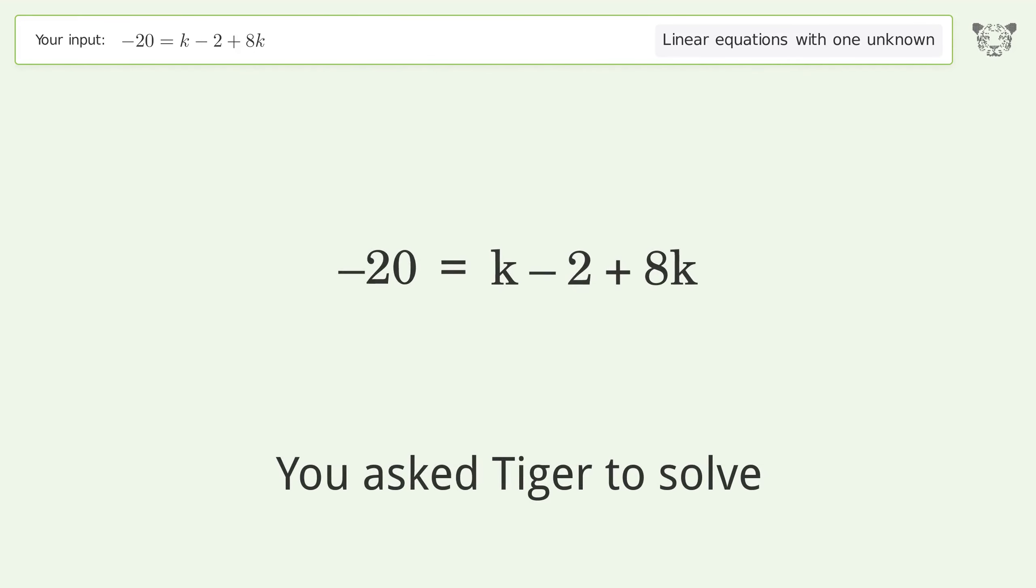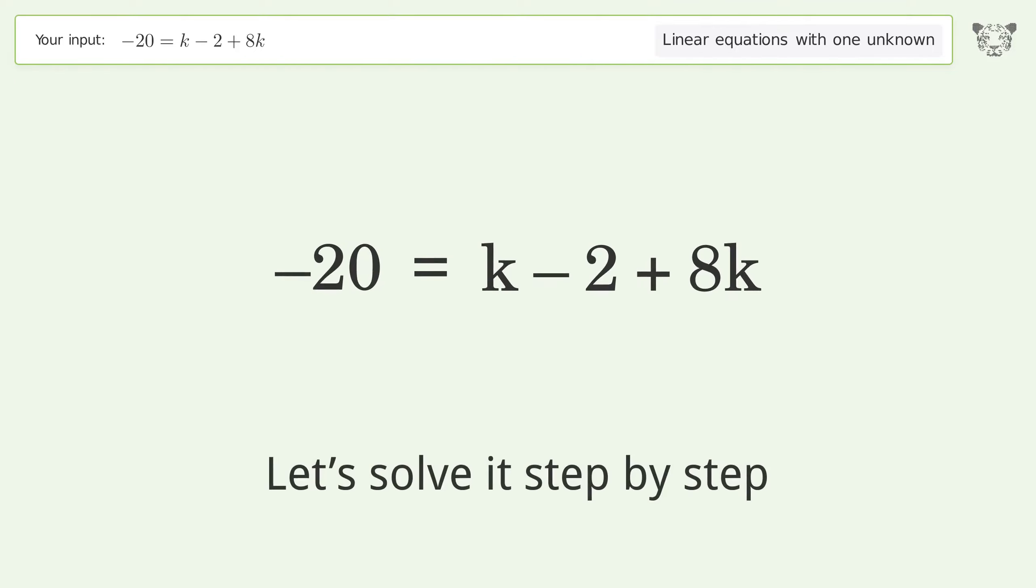You asked Tiger to solve this. This deals with linear equations with one unknown. The final result is k equals negative 2. Let's solve it step by step. Simplify the expression, group like terms.